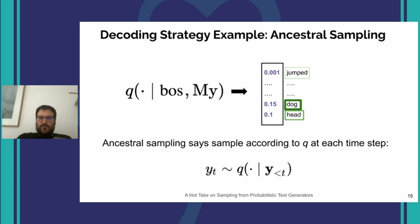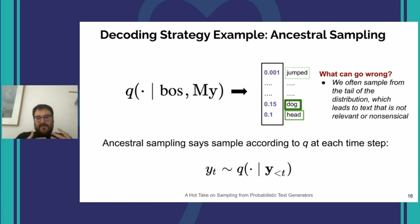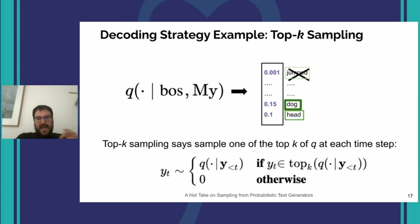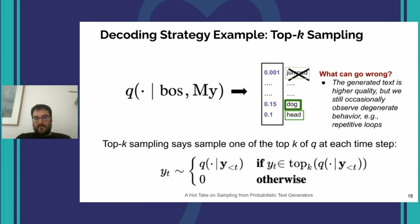Another strategy is ancestral sampling, which in a sense is the right thing to do because it's actually sampling from the model — the model we think is great because it puts high probability on held-out text. The ancestral sampling rule says: draw your Y according to the distribution. However, a lot can go wrong: we can often sample from the tail of the distribution, leading to text that is not relevant or nonsensical. Building on ancestral sampling, researchers have tried to patch it up. Top-K sampling zeros out everything not in the top K most probable tokens at a given time step, which generally generates higher quality text, though we still occasionally observe degenerate behavior like repetitive loops.